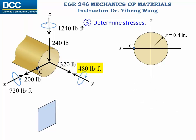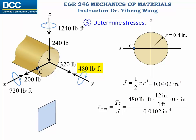Next, for the torsional moment, the shear stress is calculated by the torsion formula, where J is the polar moment of inertia about the y-axis. Don't forget the torsion is given in pound-foot and must be converted to pound-inch for consistency. Since point C is at the edge, the shear stress is maximum at 57.3 ksi. The direction is determined by the clockwise torsional moment, so at point C the shear stress points vertically upward.